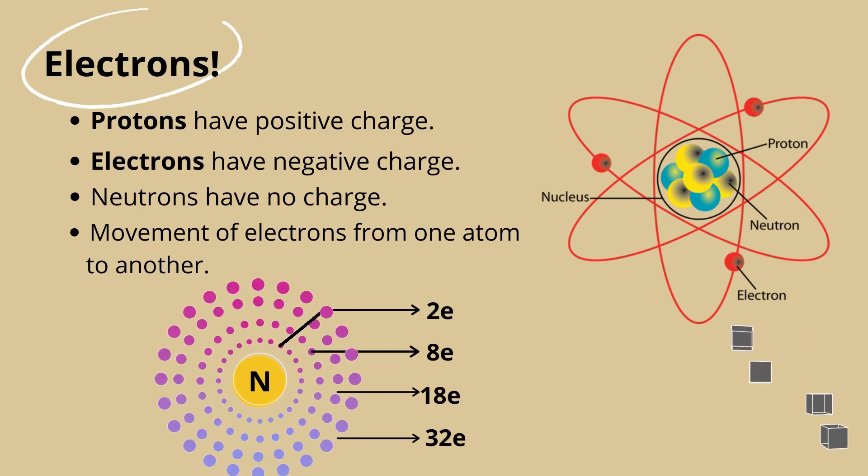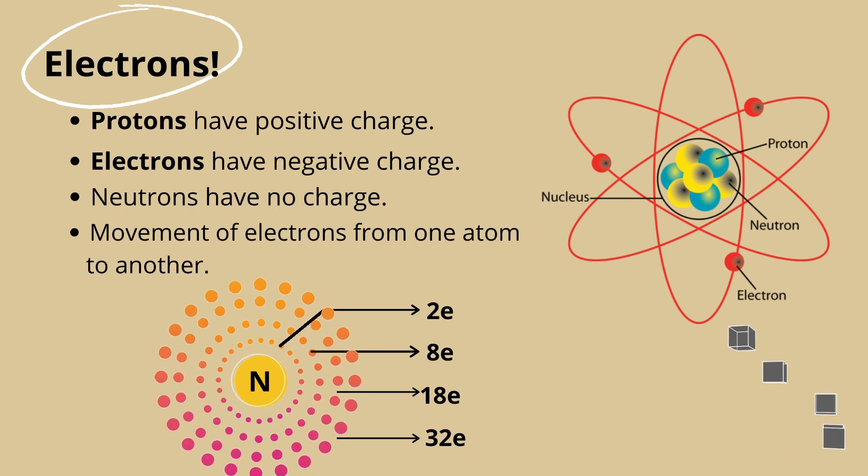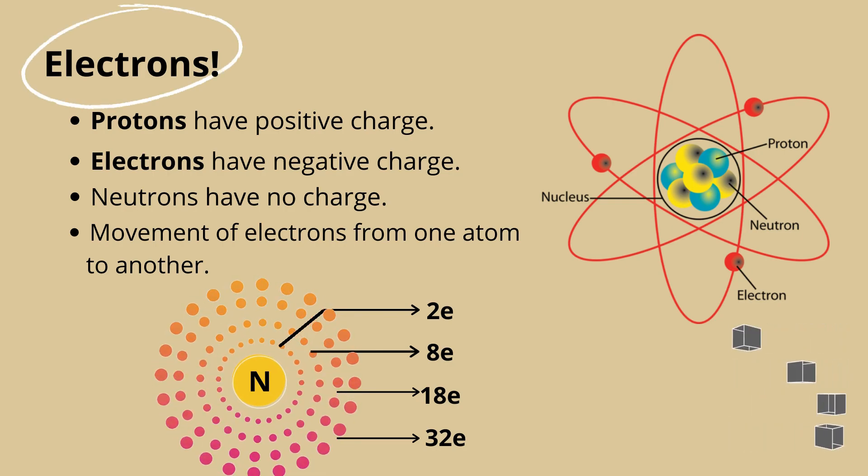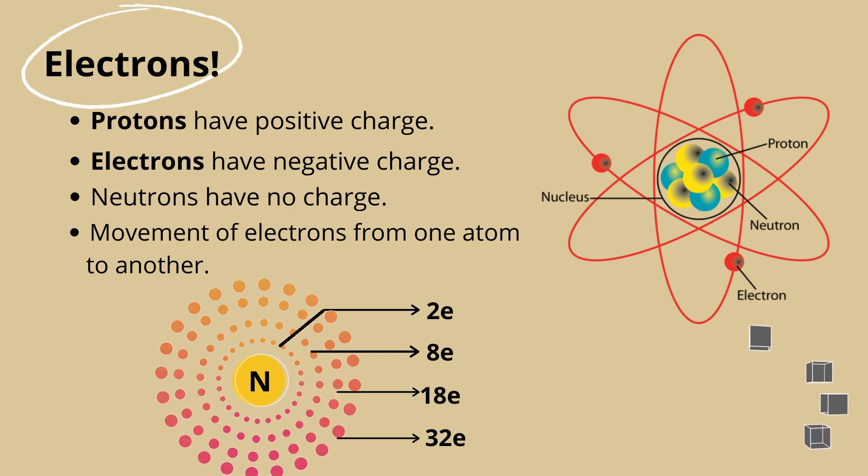Some atoms with many protons can have as many as seven shells with electrons in them. The electrons in the shell closest to the nucleus have a strong force of attraction to the protons. Sometimes they don't. Applying a force can shift these electrons from one atom to another.